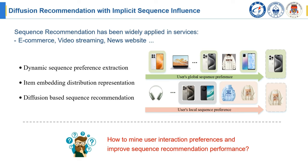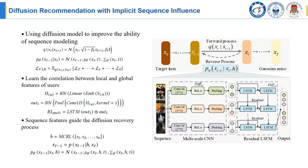For the above issues, we propose a diffusion recommendation model to freeze based on the influence of implicit sequences. Firstly, we use a diffusion model to model the item, calculate the item distribution by adding Gaussian noise into the noise-in process, and optimize the diffusion model using VLB to obtain the optimal network parameters.